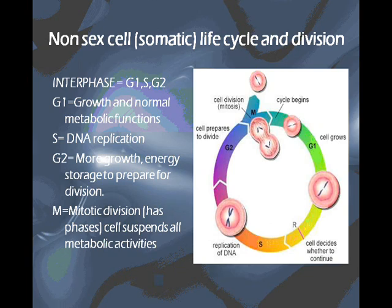The cell will only go into the S stage if there is a checkpoint that is passed, shown here on this diagram. That shows that the cell needs to go ahead and duplicate its DNA. If the cell does not need to divide, it will not go into the S stage because it won't need to make a copy of its DNA if it's not going to divide.